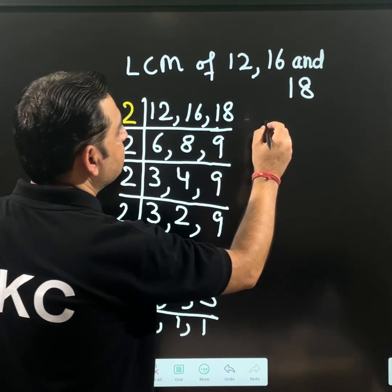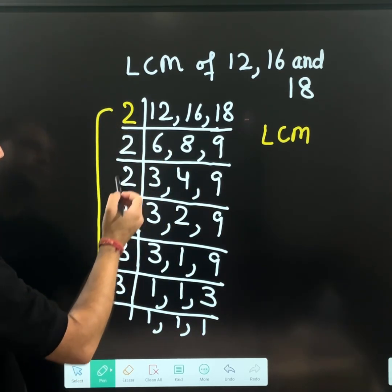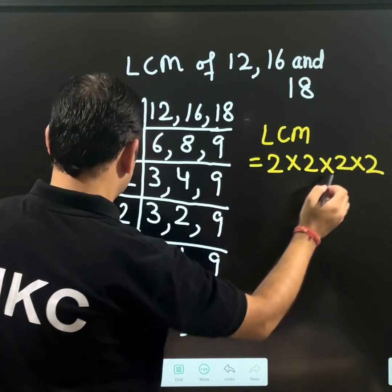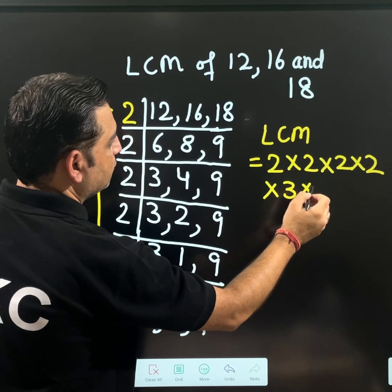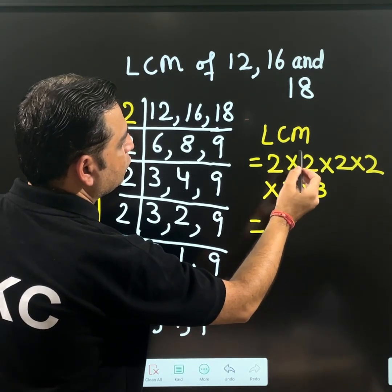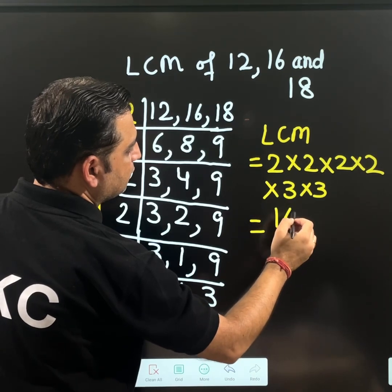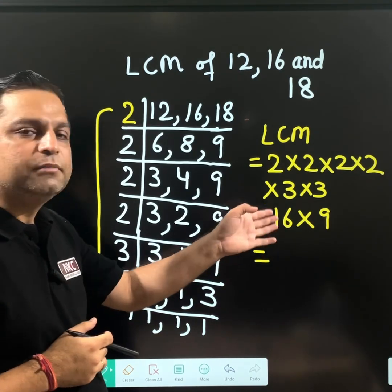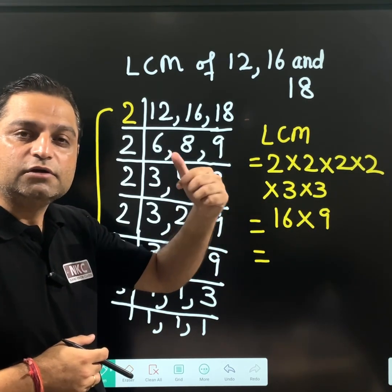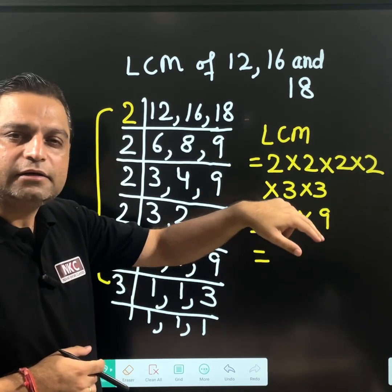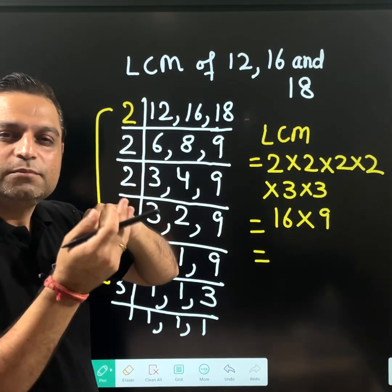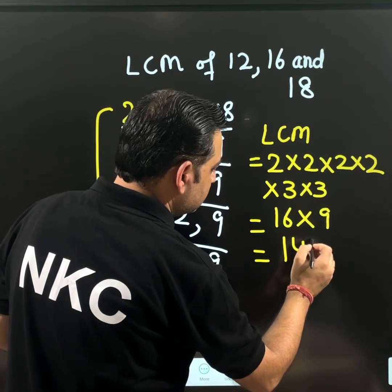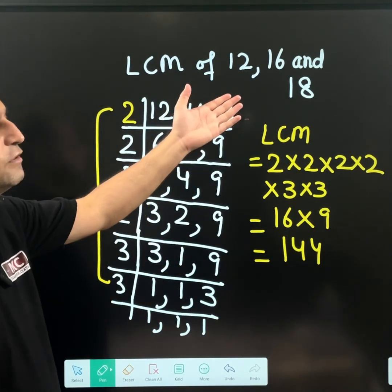Now what will be the LCM? Multiplication of all of them. Let me write here: 2 × 2 × 2 × 2 × 2, then 3 × 3. 2 twos are 4, 4 twos are 8, 8 twos are 16. 3 × 3 is 9. Now you can directly multiply 16 with 9. One way: 16 × 10 is 160, then subtract 16 from 160 to get 144. So 144 is the LCM of 12, 16, and 18. You can imagine how difficult writing tables would have been.